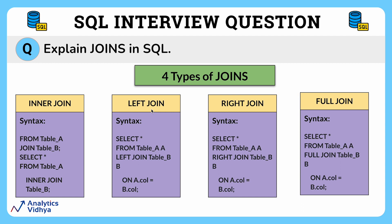Now let's look at the left join. In a left join, only rows from the left table are returned, along with the union of the left and right table where the condition is satisfied. Here is the syntax for the left join.